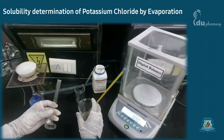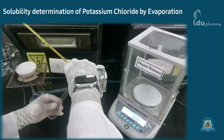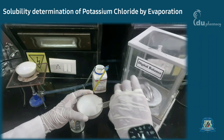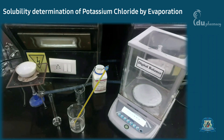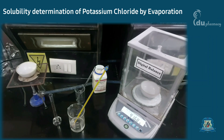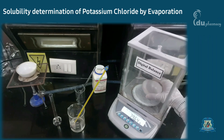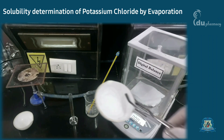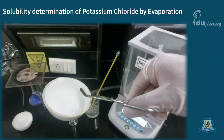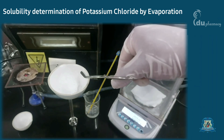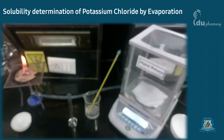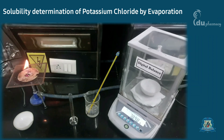I am taking another sample as the temperature has dropped to 50 degrees. You can see evaporation is complete for our first sample at 70 degrees. Take the weight of the porcelain dish with the residues.